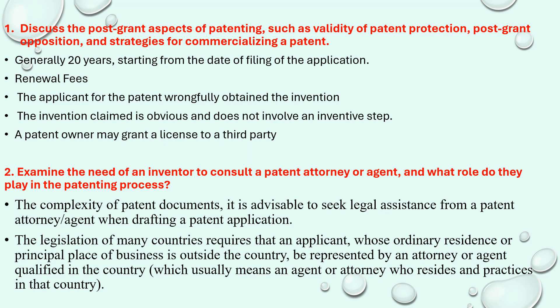The patent can be terminated if it is found that there is no innovative step involved, or that the patent has not remained valid from the date of application up to the present — this is post-grant opposition. As for strategies for commercializing a patent, the patent owner can give a license to a third party to ensure the product is well sold and well maintained.